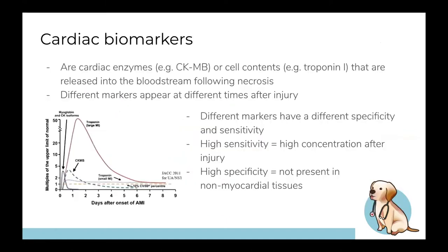Biomarkers are cell contents from myocytes released when they undergo ischemia or necrosis. Normally contained inside cardiac cells, when we have ischemia or necrosis they're released into the circulation and we can measure them when we suspect an MI. Different markers are released and peak at different times. Troponin is the most important cardiac biomarker — it's this huge peak on the graph.